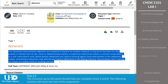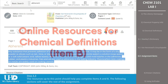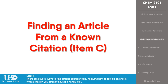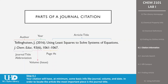The resources we've gone over so far will help you complete item A of your lab assignment, finding the physical properties of your compound, and item B, the definition of your term. Item C, finding an article from a known citation, is the next part of the assignment to complete. There are several ways to find articles about a topic you're interested in researching. Whether your instructor has provided you with a citation to look up, or you've found a citation in a book or paper you'd like to read, knowing how to look up an article with a citation you already have is a handy skill. To find an article from a known citation, first look at the citation itself. Your citation will have, at minimum, the journal title abbreviation, the volume, and the date of publication.